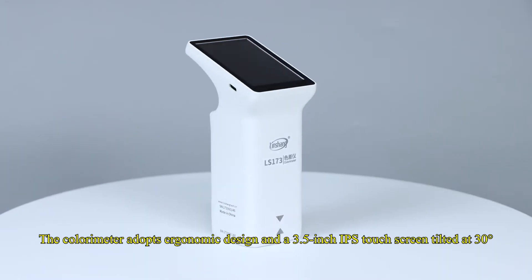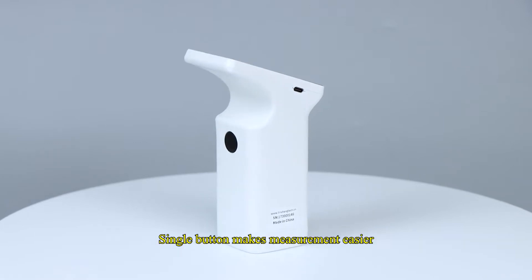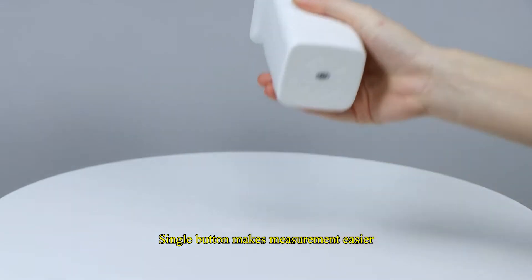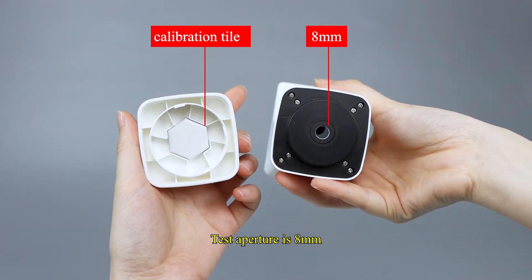The colorimeter adopts ergonomic design and a 3.5-inch IPS touchscreen tilted at 30 degrees. Single button makes measurement easier. The bottom cover has a built-in white calibration tile. Test aperture is 8mm.